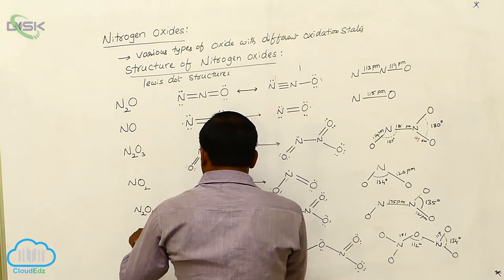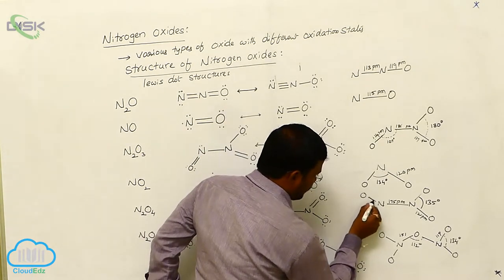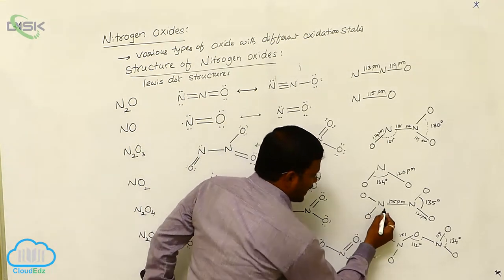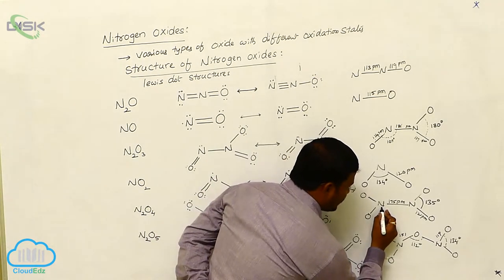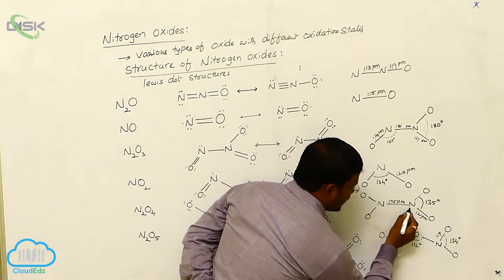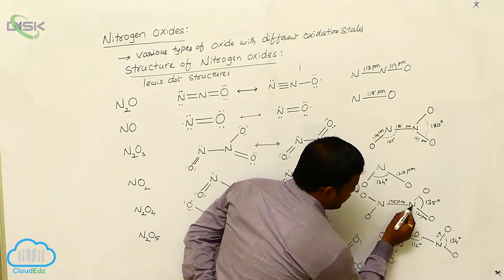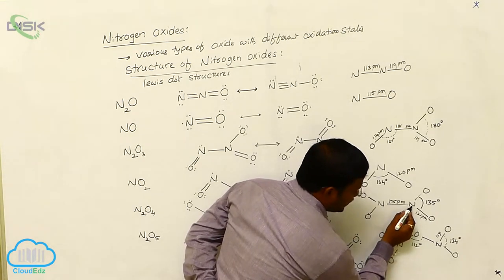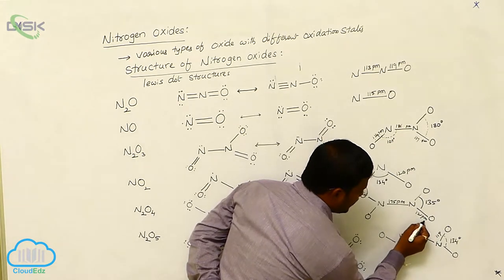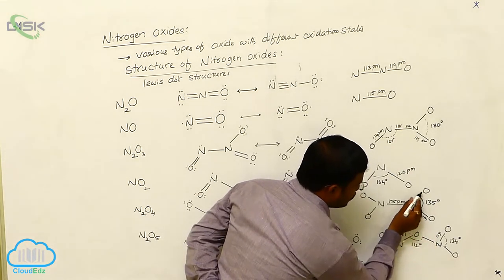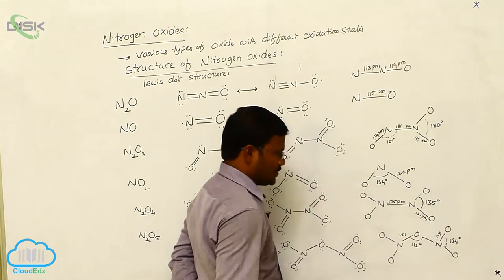In nitrogen tetroxide, we can write it as the planar form of nitrogen tetroxide. The bond length between nitrogen and nitrogen is 175 picometers, whereas the bond length between nitrogen and oxygen is 121 picometers, and the bond angle between nitrogen and oxygen is 135 degrees.